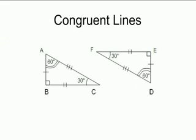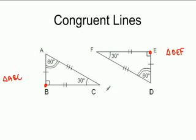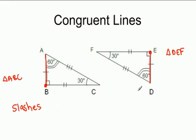Looking at these two shapes — triangle ABC and triangle DEF — notice there are slash marks on the sides. When looking for congruent lines, you look for matching slash marks. Line AB has one slash mark, and line ED has one slash mark, so line AB is congruent to line DE.